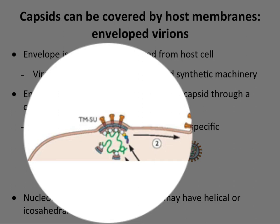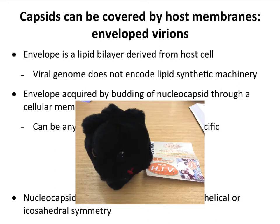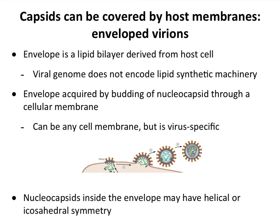Here we have a nucleocapsid — RNA and protein — wrapped up in an envelope. This is actually a retrovirus, which, of course, is what HIV is. This little giant microbe model shows HIV as an icosahedron with a five-fold axis of symmetry. But this isn't right, because retroviruses have an envelope on the outside and don't have icosahedral symmetry. If you look at the actual particles, they would look something like this.